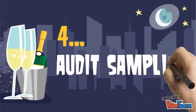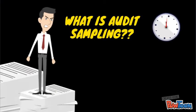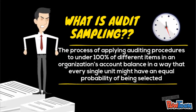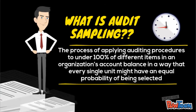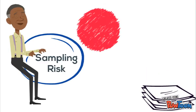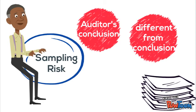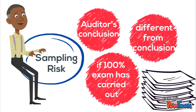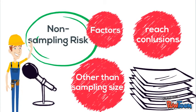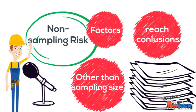The fourth subtopic is Audit Sampling. Audit sampling is the application of audit procedures to less than 100% of the total population, where all items in the population have the same chance to be selected. This ensures that selected items represent the total population, enabling auditors to draw conclusions and express their opinion. Sampling risk is the risk that the auditor's conclusion based on the sample may differ from conclusions reached if 100% examination were carried out; however, this can be reduced by increasing the sample size. Non-sampling risk refers to factors that cause auditors to reach a conclusion other than through sampling, for example when an auditor relies on erroneous information.